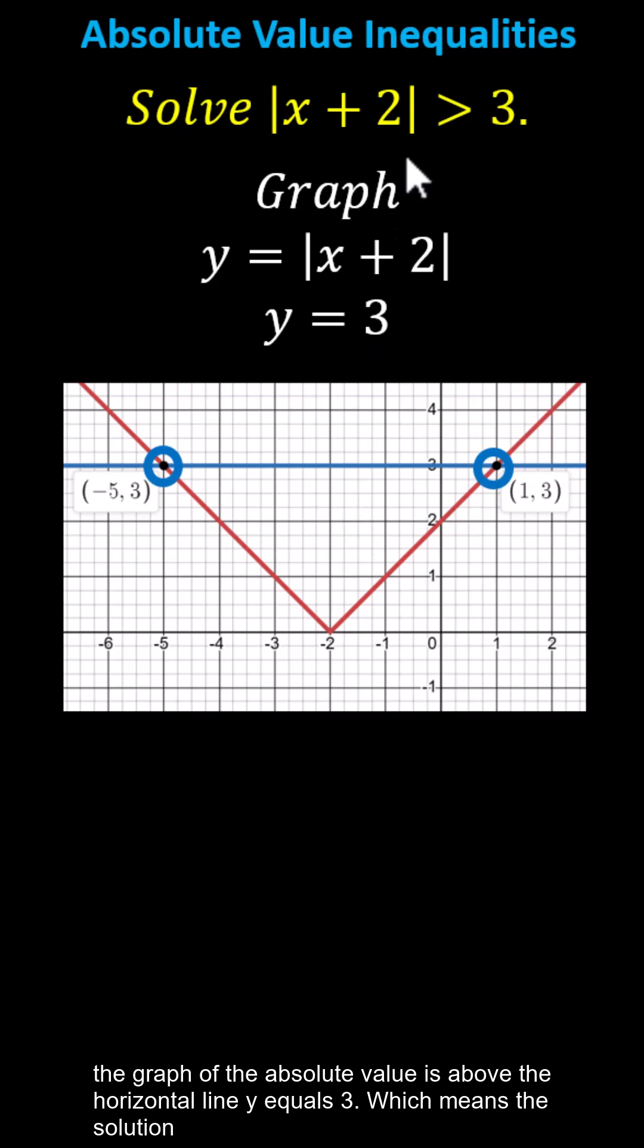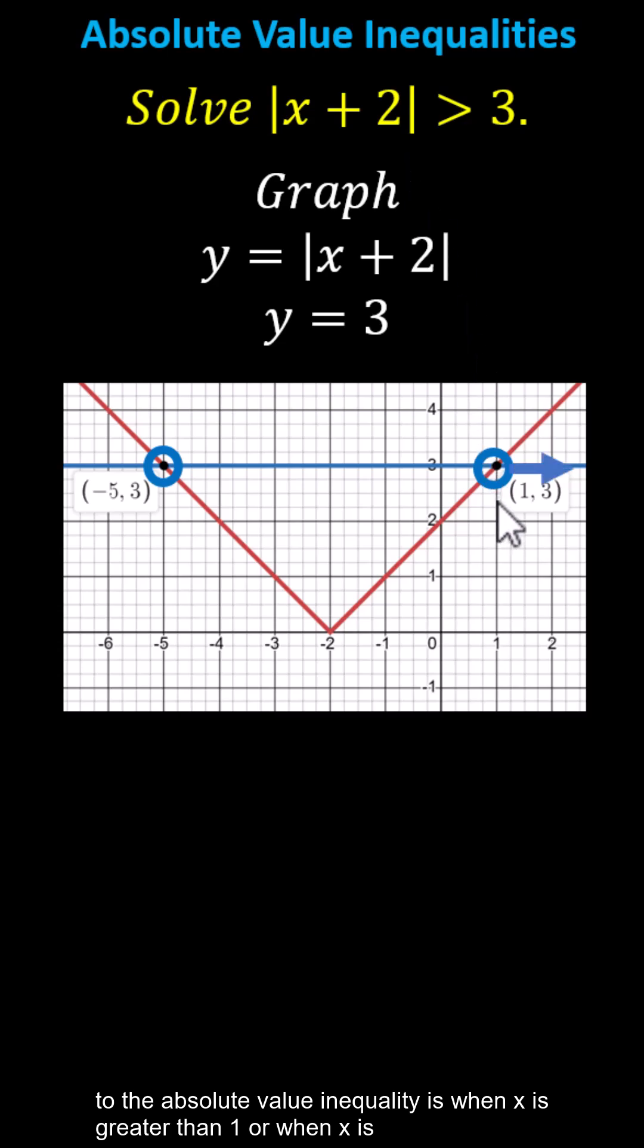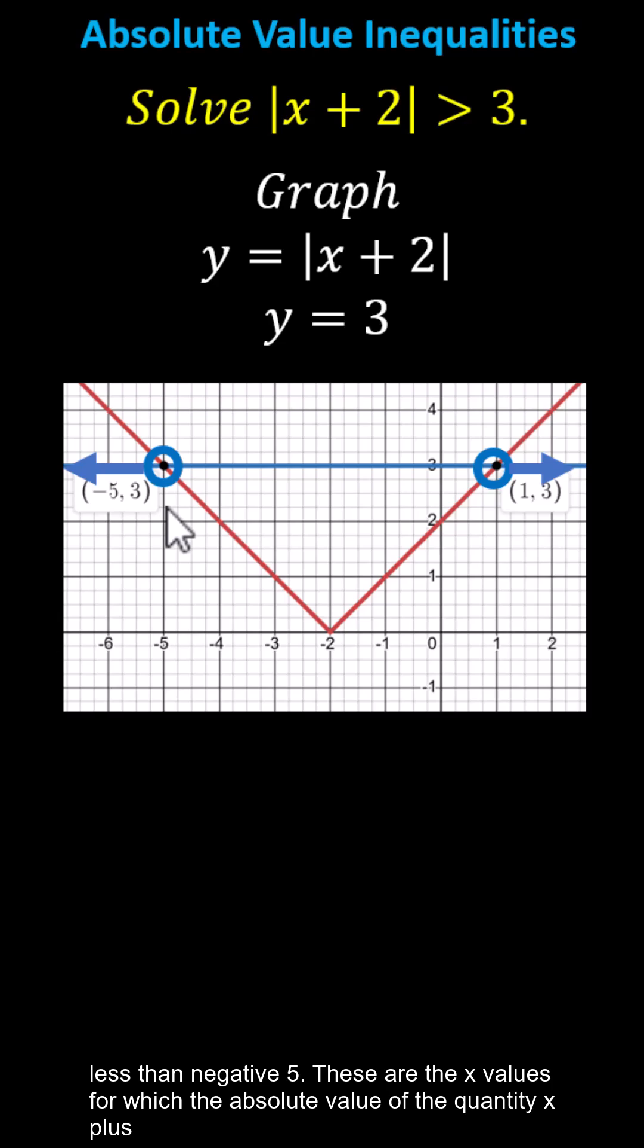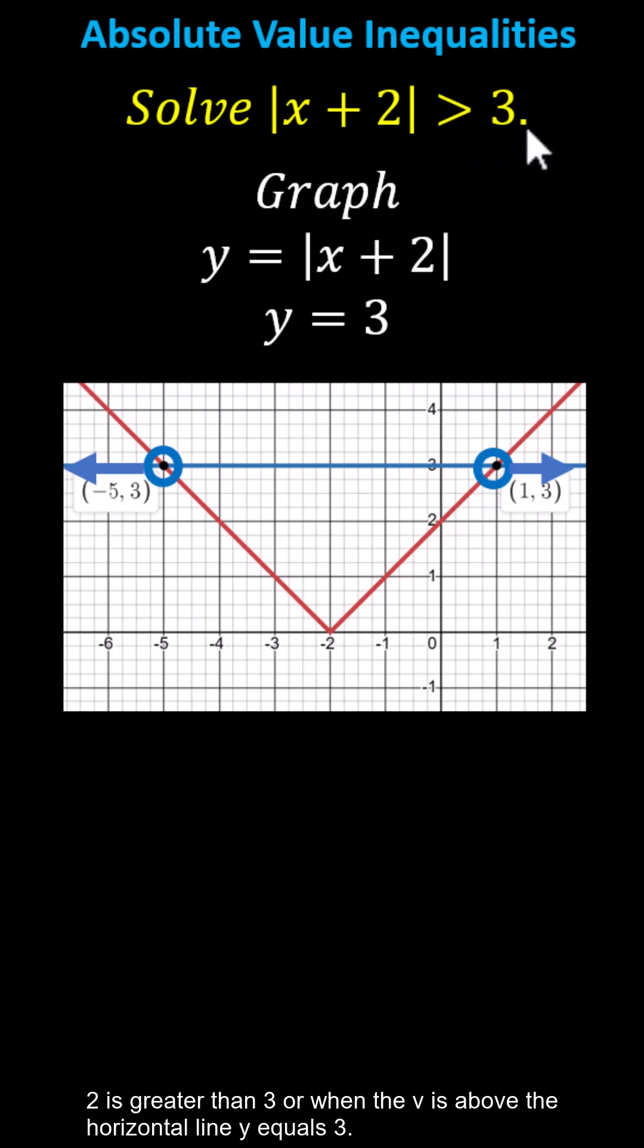Which means the solution to the absolute value inequality is when x is greater than 1 or when x is less than negative 5. These are the x values for which the absolute value of the quantity x plus 2 is greater than 3, or when the v is above the horizontal line y equals 3.